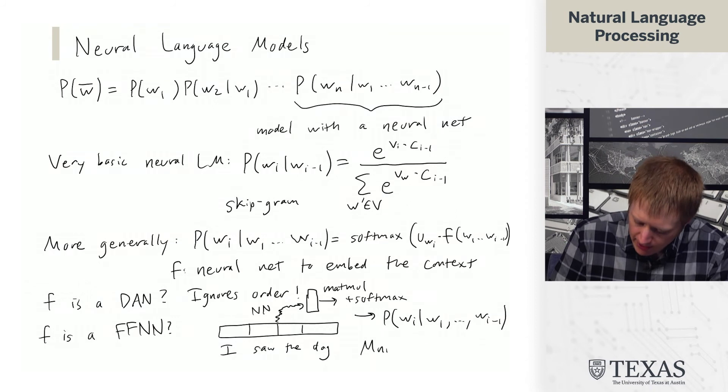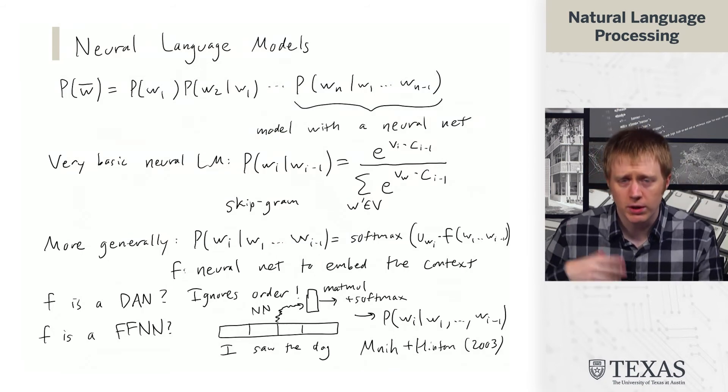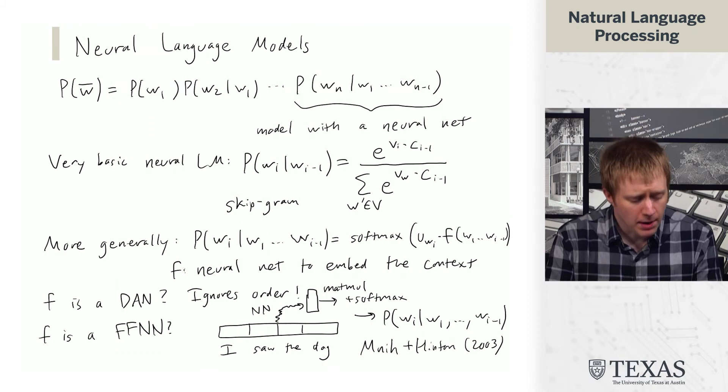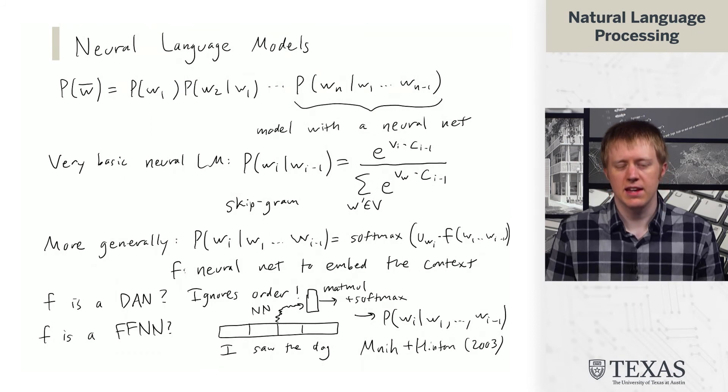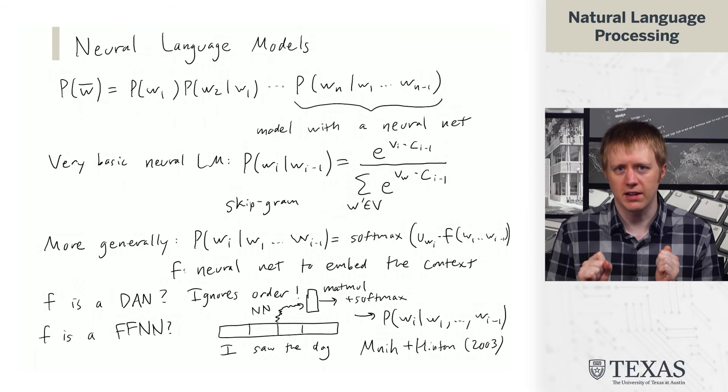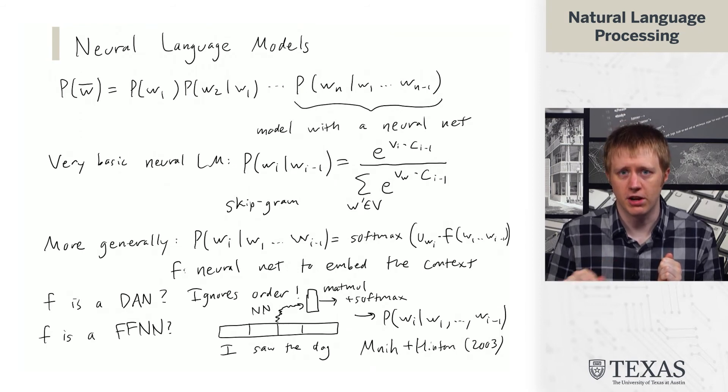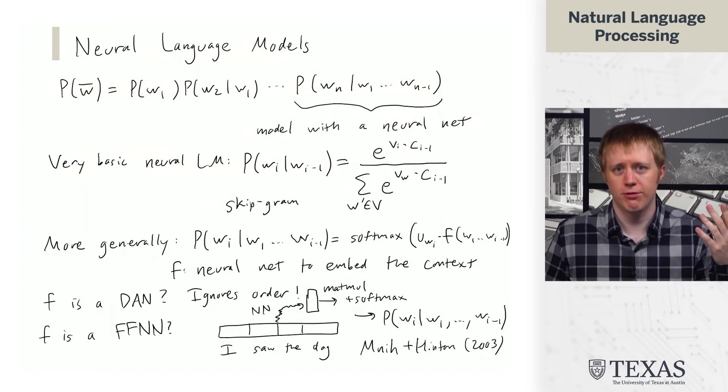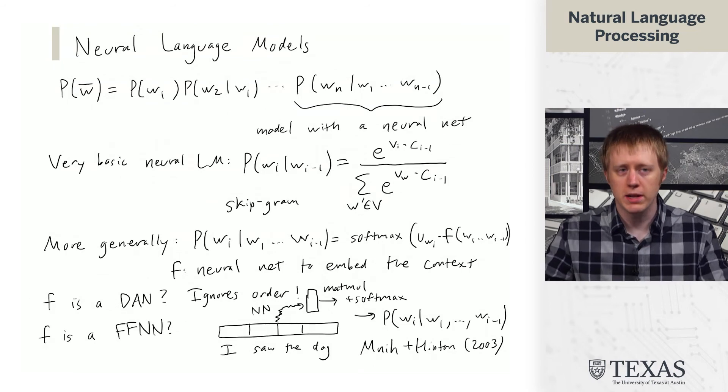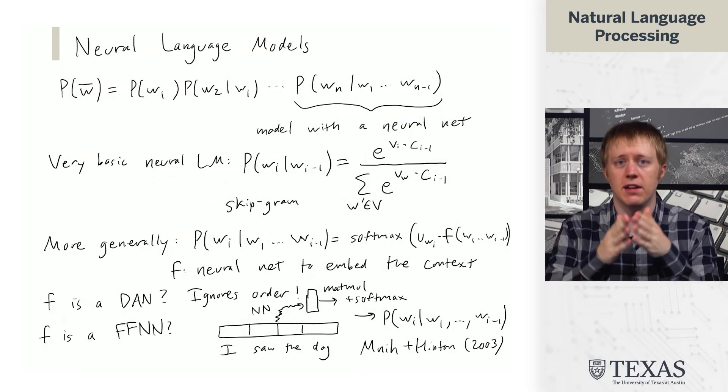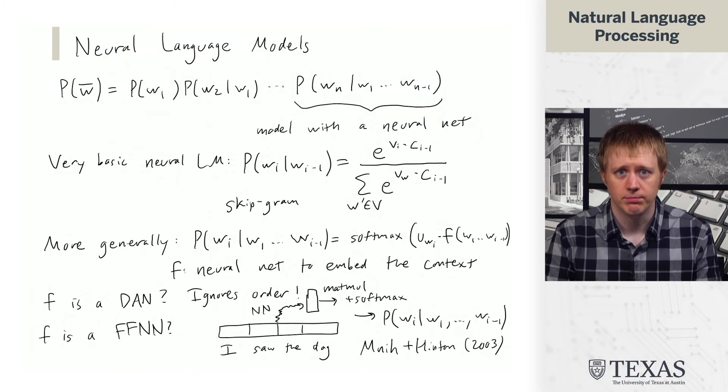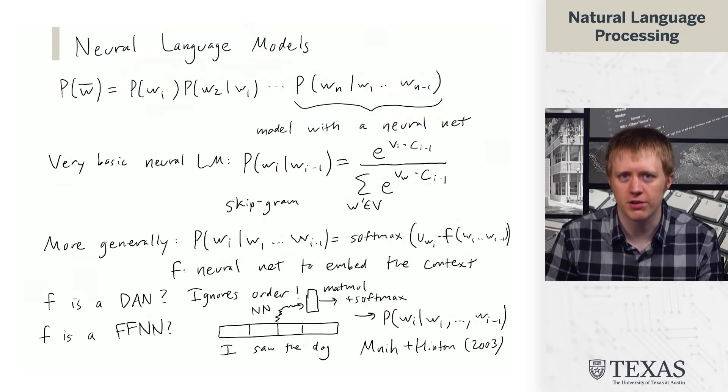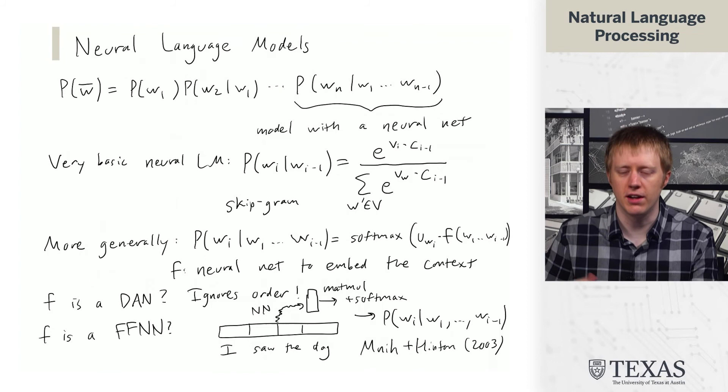All right. And so this has been explored in prior work by Bengio and Hinton quite a while ago, back in 2003. The problem with this is that it also has the same problem as n-gram language models in that it doesn't necessarily scale to long contexts. So if we, for example, want to include 20 words of context, suddenly we need a very large neural network in order to do that. And the number of parameters sort of grows in the amount of context that we want to use.